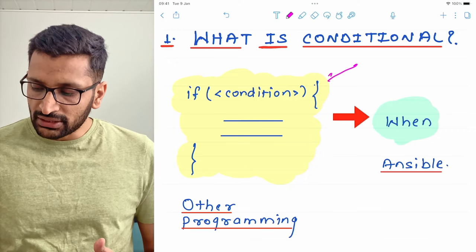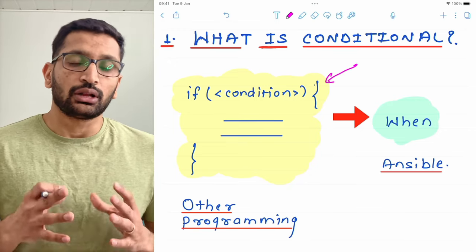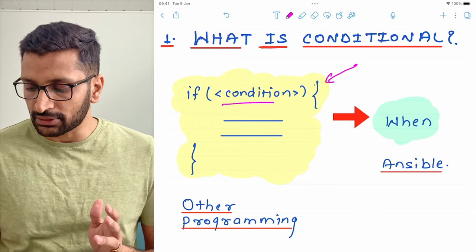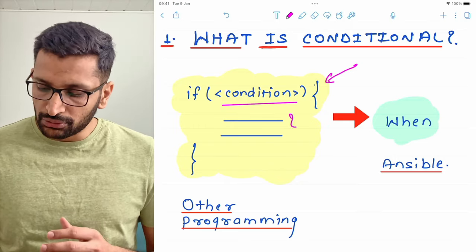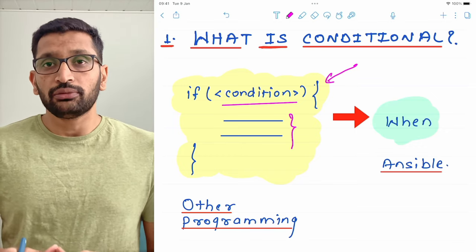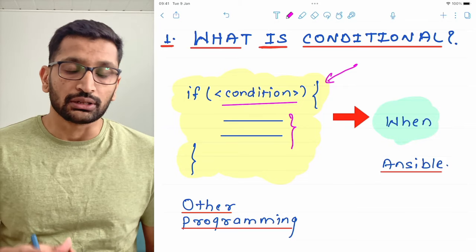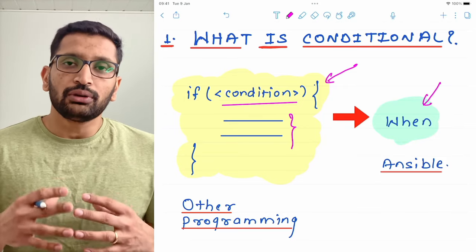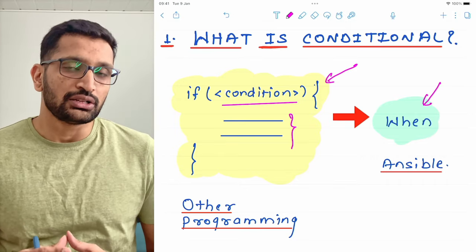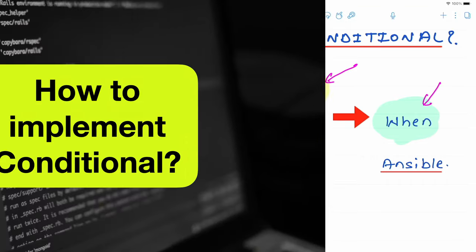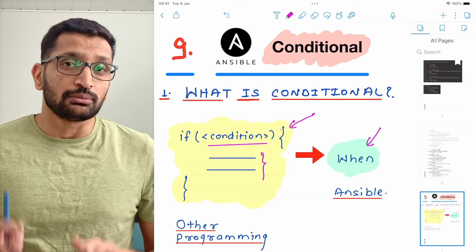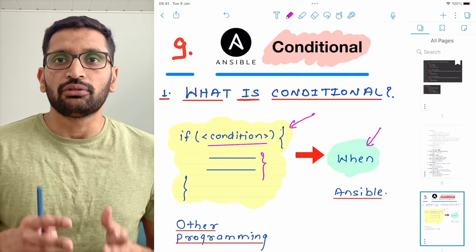On the screen you can see on the left hand side a traditional if condition from any other programming language, where you specify if, then a condition, and after that the code you want to execute. But in Ansible we don't have an if condition — instead we have a when condition. Whenever we need to put any condition we use the when conditional inside our Ansible playbook. It might sound complicated at first but it is really simple to implement.